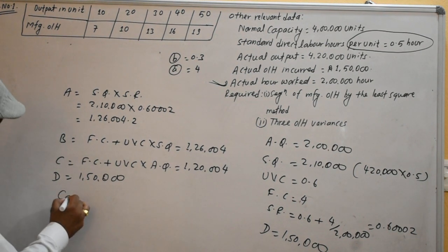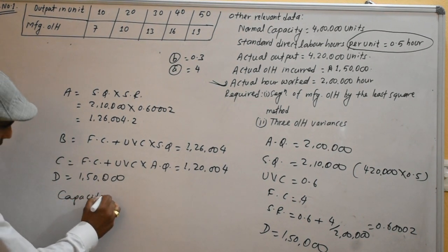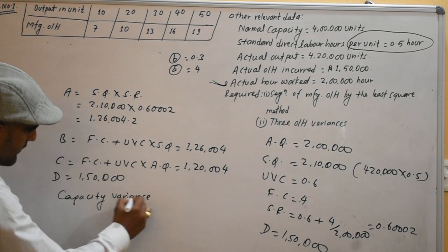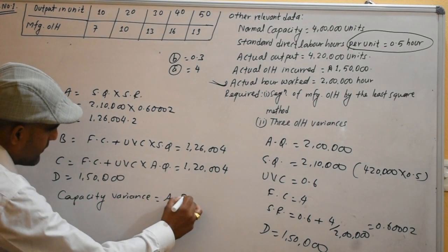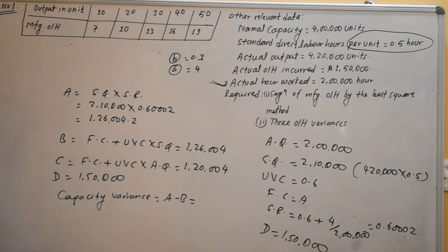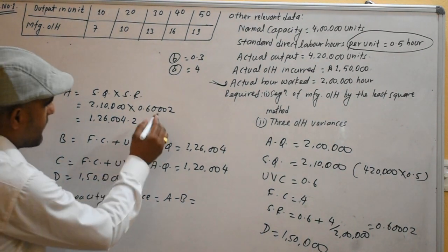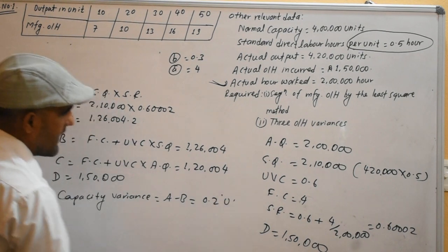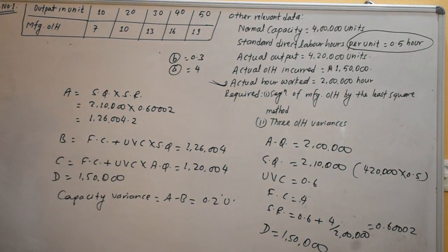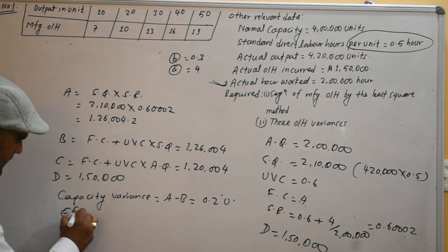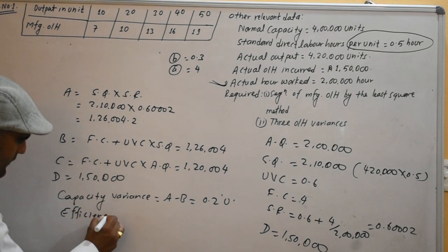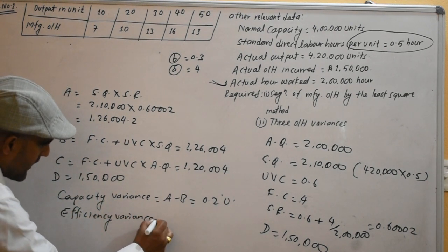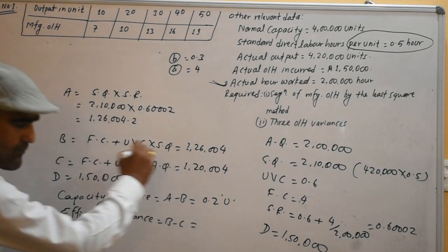Capacity variance equals A minus B (unfavorable). Efficiency variance equals B minus C (or b minus u). Thank you so much for joining us and we'll see you in the next video.